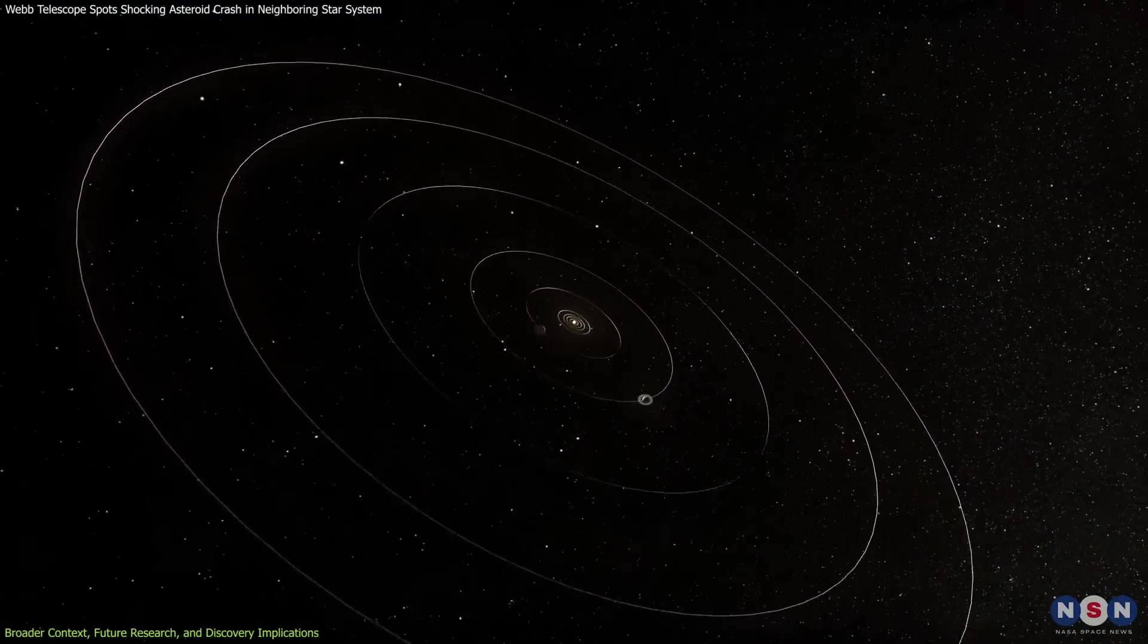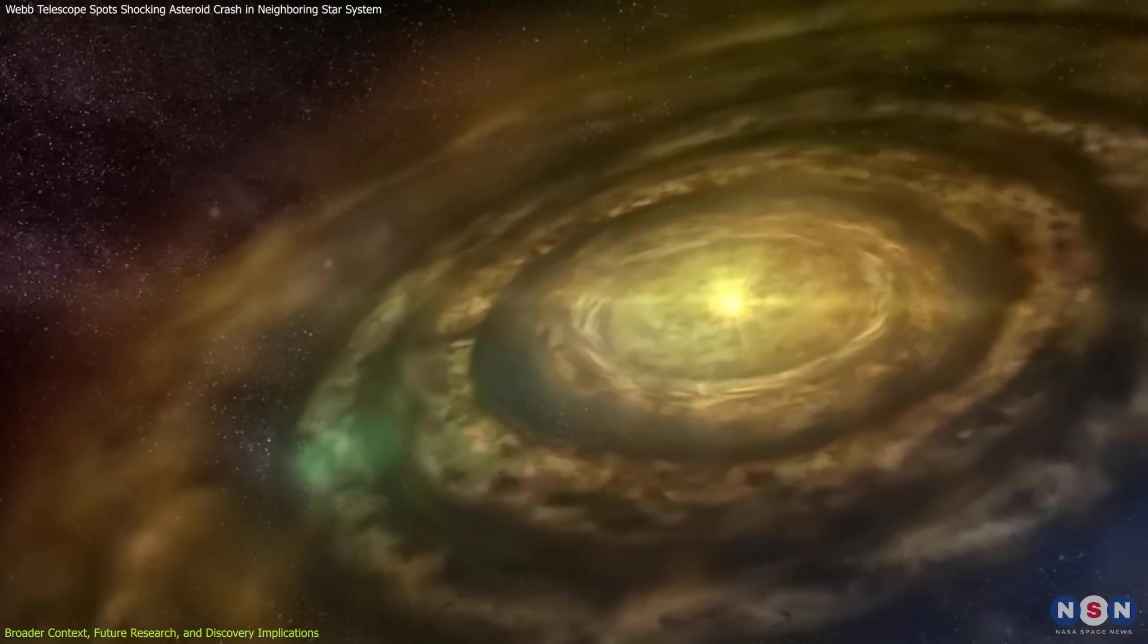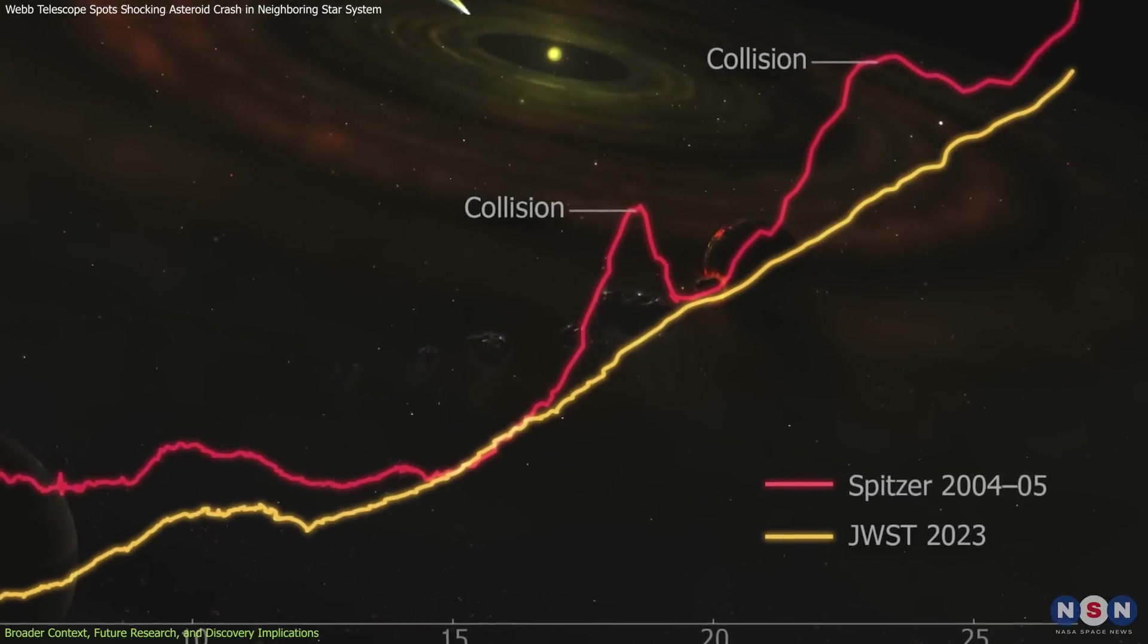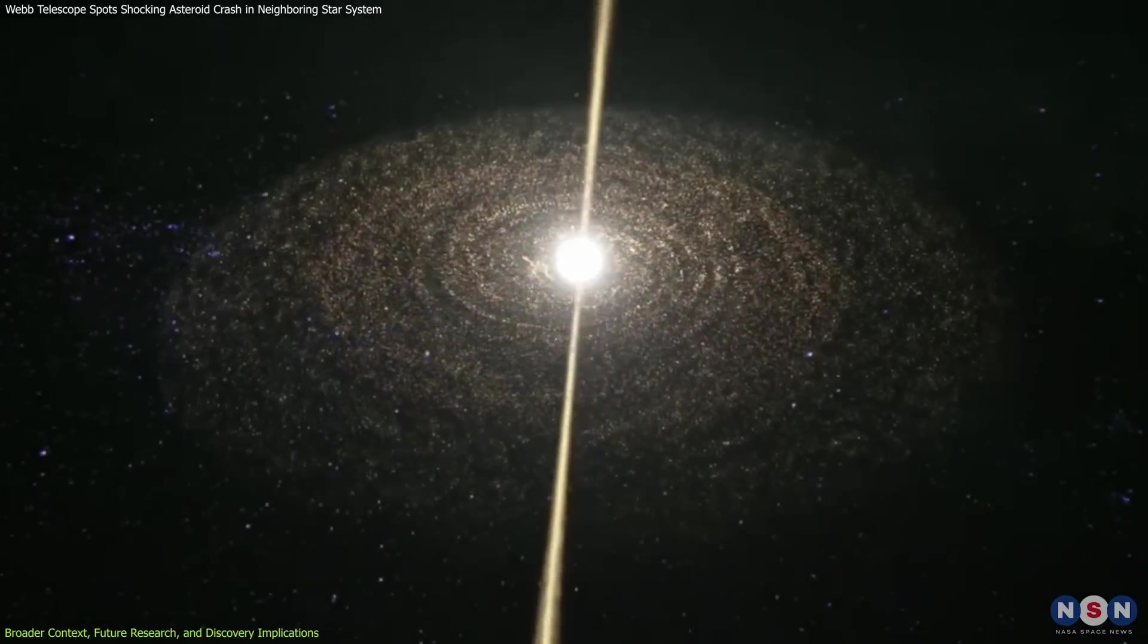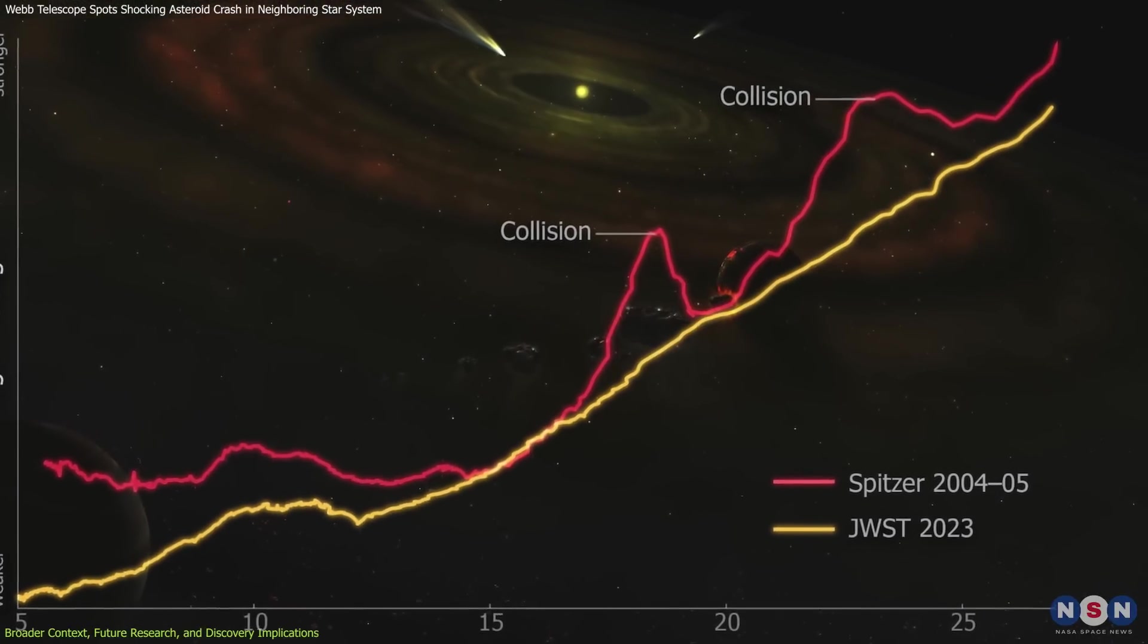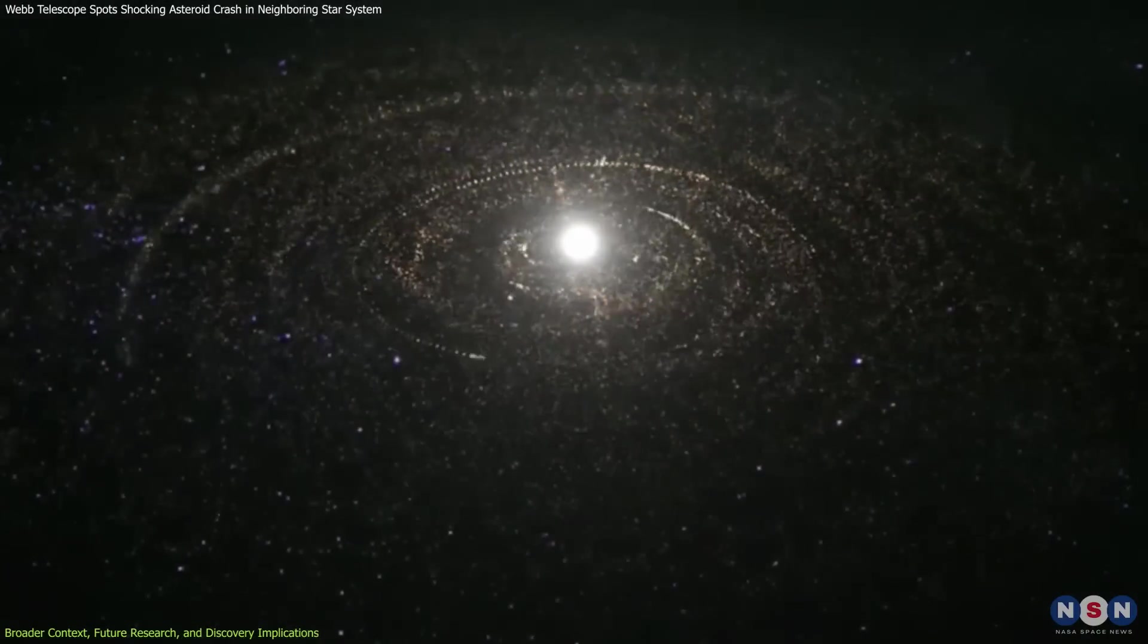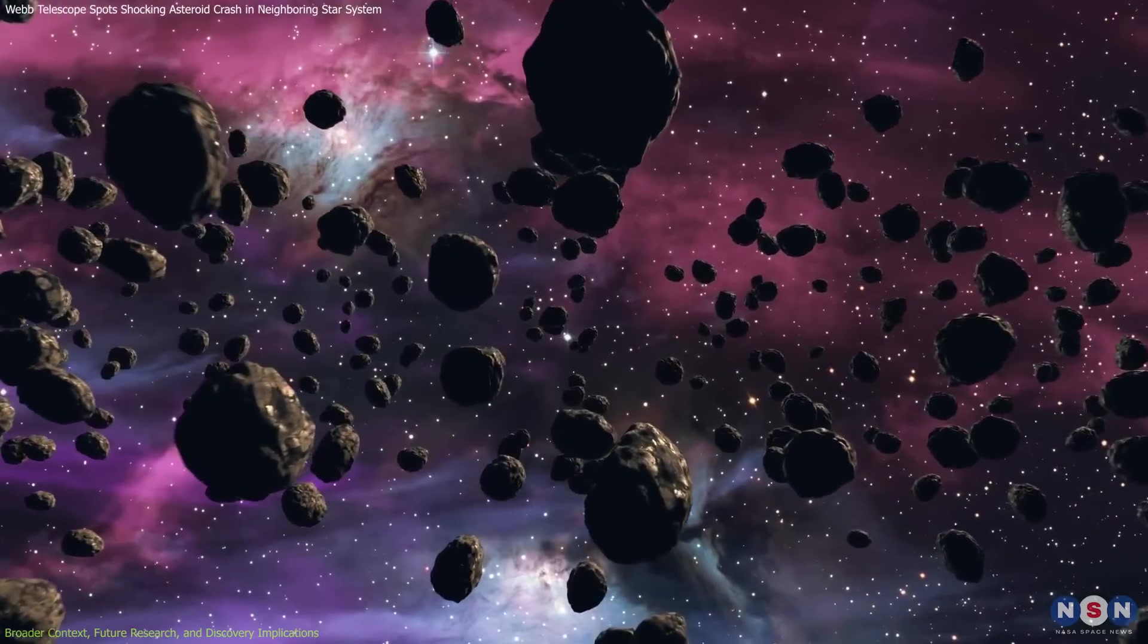As we continue to explore these intriguing systems with advanced tools like the James Webb Space Telescope, our grasp of planetary formation and the processes shaping young star systems will undoubtedly evolve, paving the way for further groundbreaking discoveries in astronomy and planetary science. In conclusion, the discovery of an asteroid collision in the Beta Pictoris star system represents a significant milestone in our understanding of planetary formation and star system dynamics. The observations by the Spitzer and James Webb Space Telescopes provide invaluable insights into the volatile processes that shape young star systems. This event challenges previous assumptions about dust replenishment and highlights the importance of continuous monitoring and advanced technology in uncovering the mysteries of our universe.